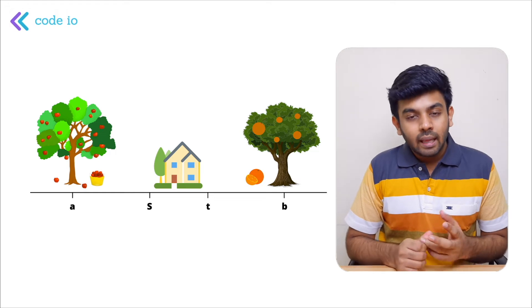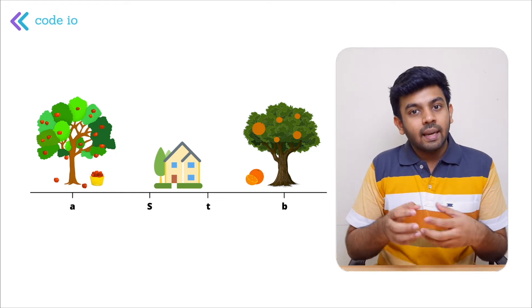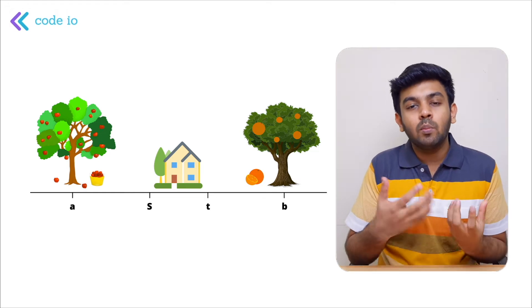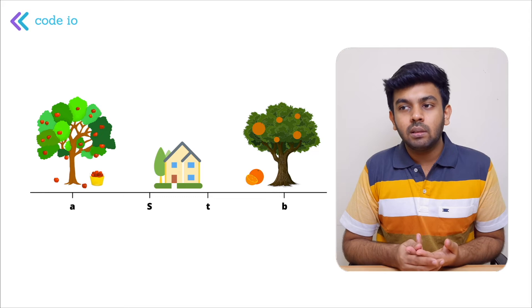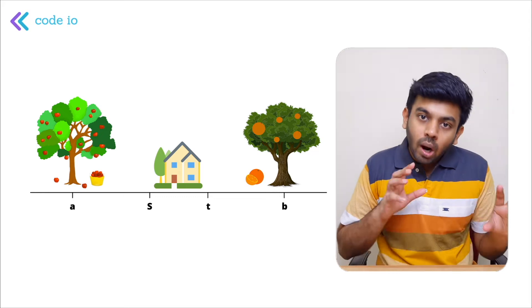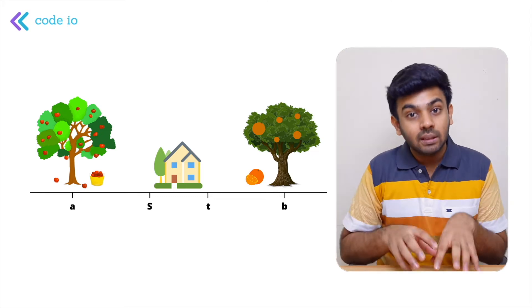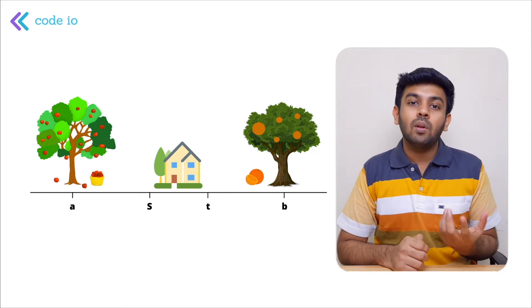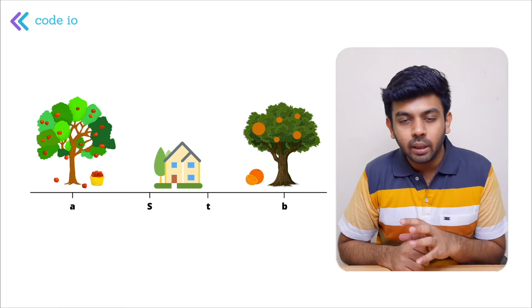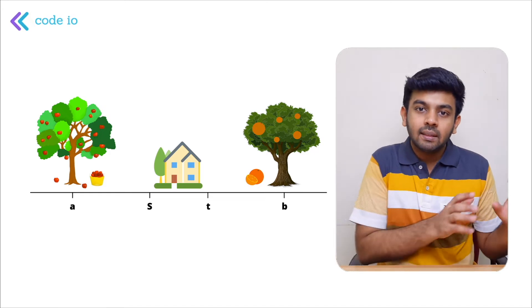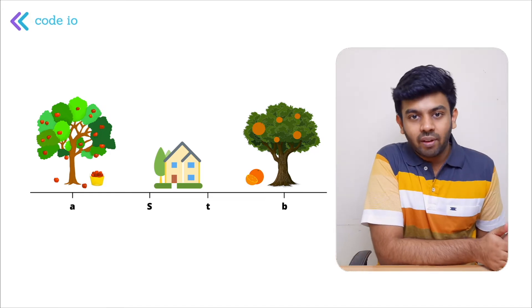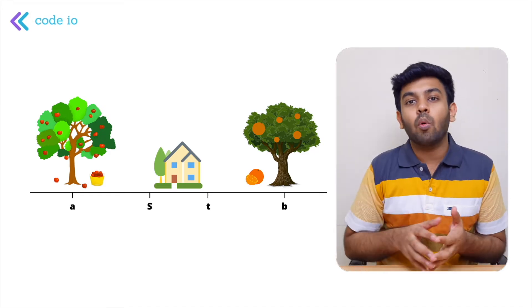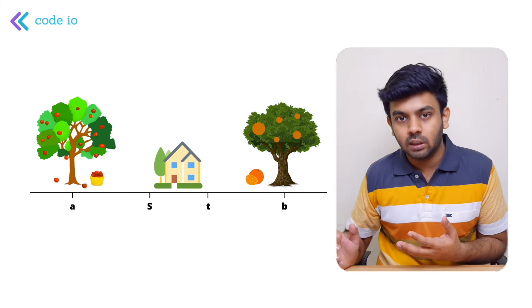Your house is surrounded by trees on either side — an apple tree to the left and an orange tree to the right. The next input they give is the coordinates of these trees: A is the coordinate of the apple tree and B is the coordinate of the orange tree.